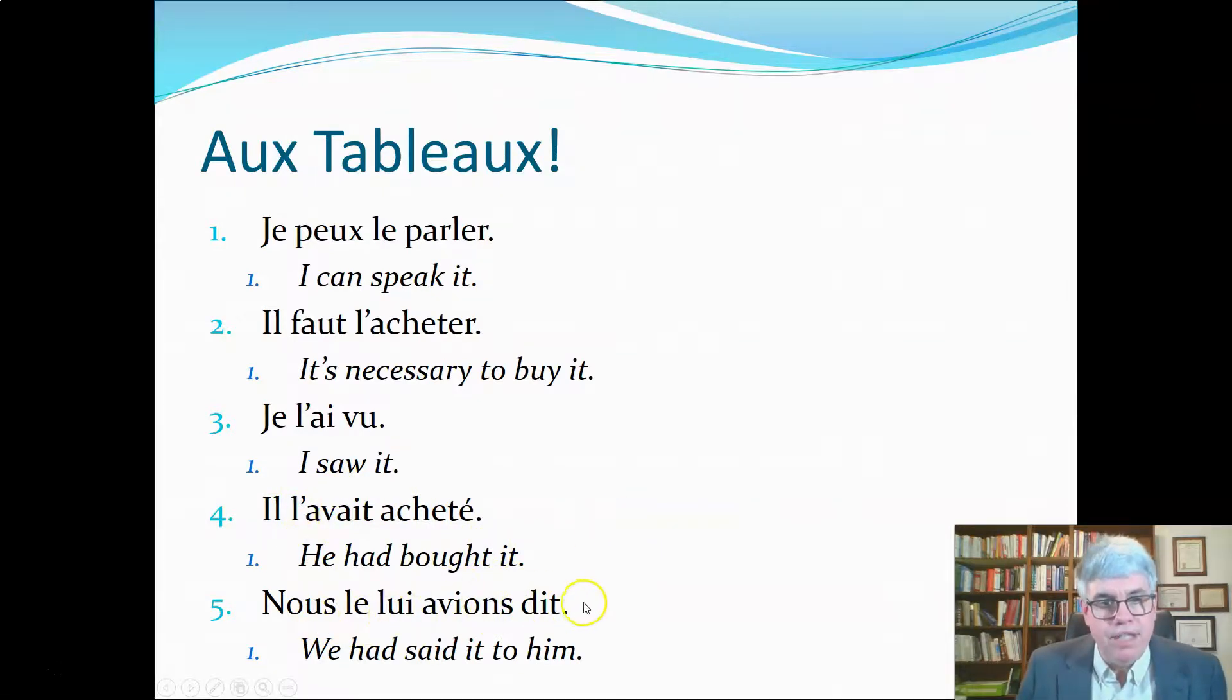Nous le lui avions dit. So, here we've got two object pronouns, direct object and indirect object. It's the pluperfect because the helping verb is in the imperfect. And with dire, to say. So, we had said it to him, would be how we would translate this. Thank you so much.